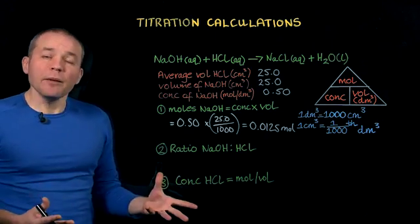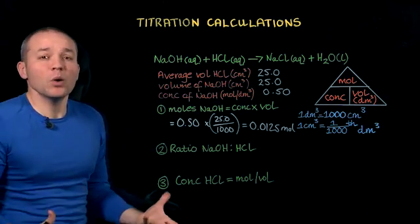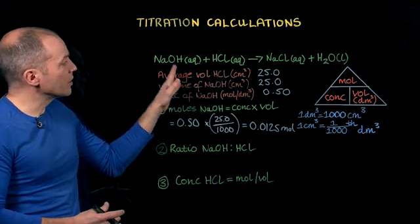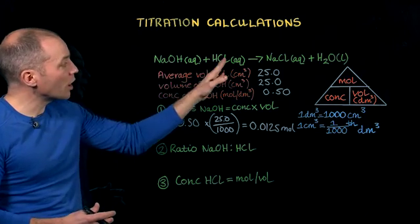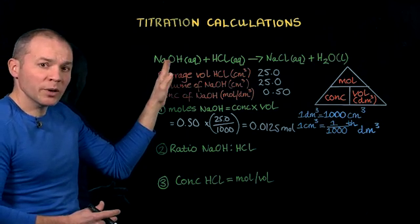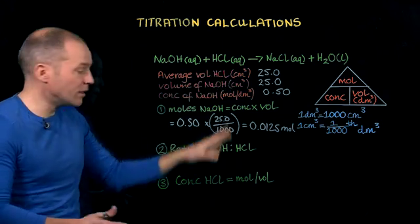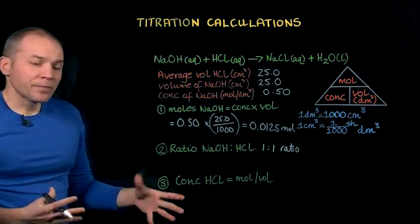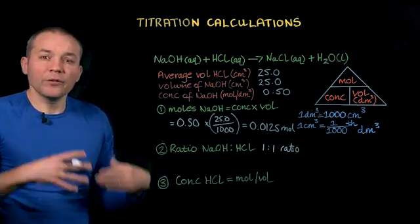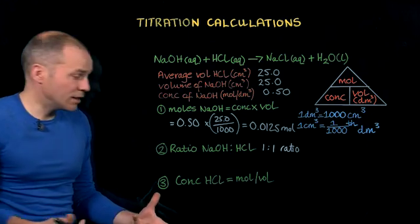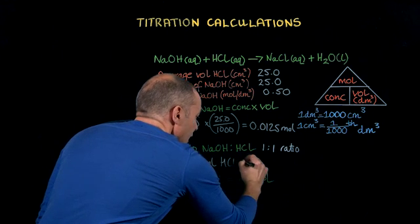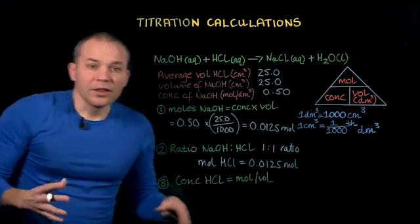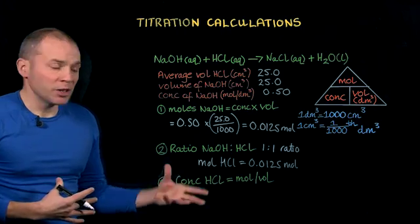In the second step, we use the balanced equation to work out how many moles of hydrochloric acid there must have been, and we look at the ratio of the two reactants. The ratio of sodium hydroxide to hydrochloric acid is one to one — there are no balancing numbers here, so one mole of sodium hydroxide reacts with one mole of hydrochloric acid. So for however many moles of sodium hydroxide we have, we have the same number of moles of hydrochloric acid. Therefore, moles of hydrochloric acid equals 0.0125 moles.